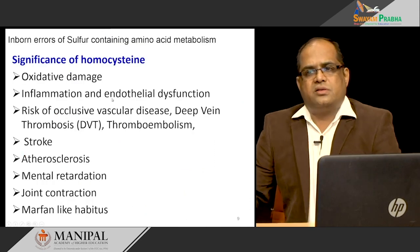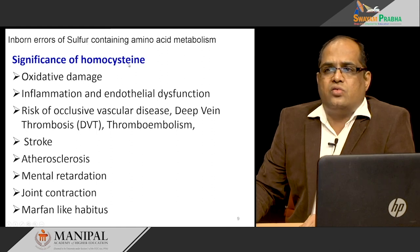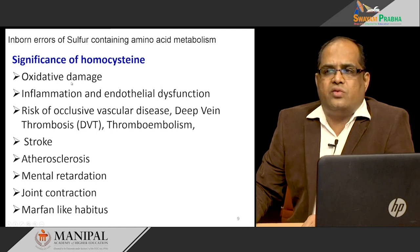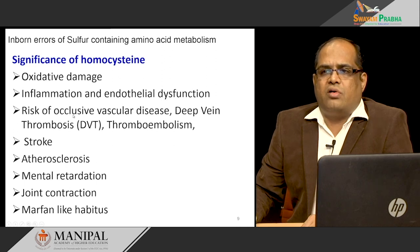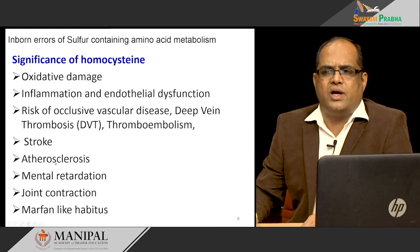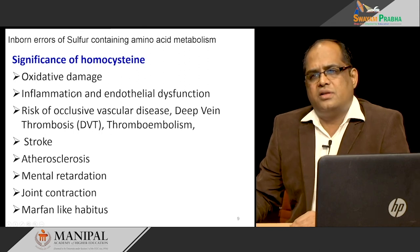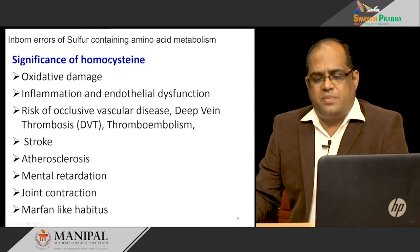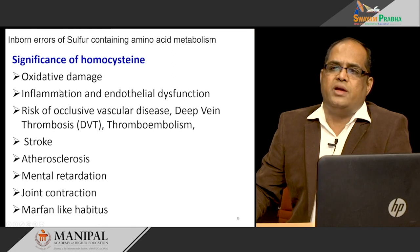The significance of elevated homocysteine: it can cause oxidative damage and inflammation of endothelial dysfunction, risk of occlusive vascular disease, deep vein thrombosis, thromboembolism, stroke, atherosclerosis, mental retardation, joint contraction, and Marfanoid habitus. It affects almost all organs in the body — just from one molecule called homocysteine. We have to explain biochemically why homocysteine is associated with so many disorders.